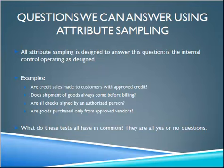What kinds of questions can we answer using attribute sampling? There are always yes or no questions. Are credit sales made to customers with approved credit? Do shipments of goods always come before billing? Are all checks signed by an authorized person? Are goods purchased only from an approved vendor? Attribute sampling is not just an eclectic set of questions — when reviewing the examples, you'll see that we test a big set of attributes when we get any one document.